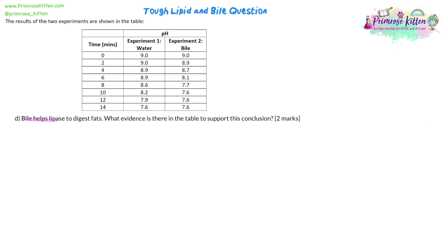Now we look at the table for the next question. Bile helps lipase to digest fats — it doesn't say how it helps, and it doesn't say exactly, but the idea that it helps suggests it makes digestion happen faster. The question asks: what evidence is there in the table to support the conclusion that bile is helping the fats to be digested faster? If we're looking for evidence in a table, we look at the numbers, we look at patterns, or both. We need evidence of the pH decrease happening faster.